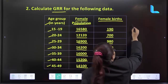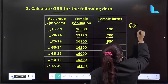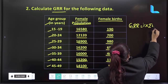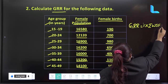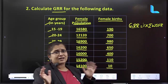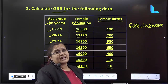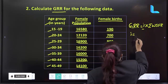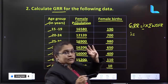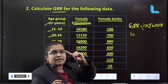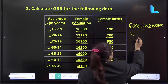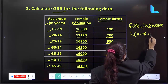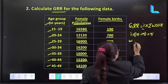GRR — you can calculate GRR. I will explain the formula. So the formula: first, what are we looking at? I will explain for the 15 to 19 age group. The class interval is 5, since 15 to 19 covers five years. Next, WSFR.